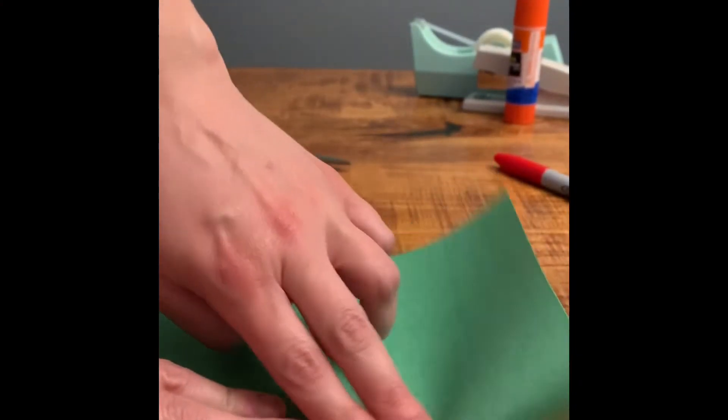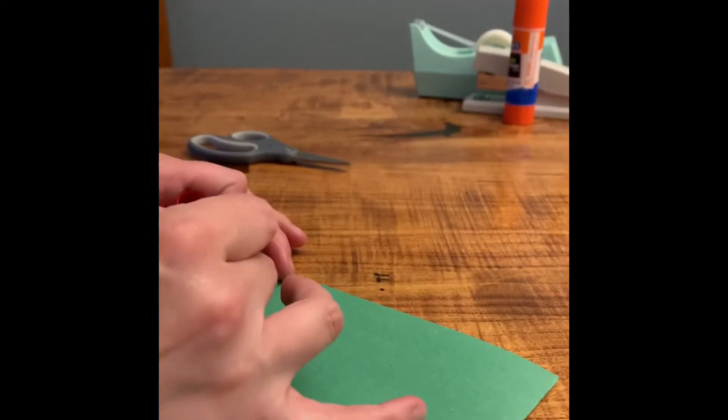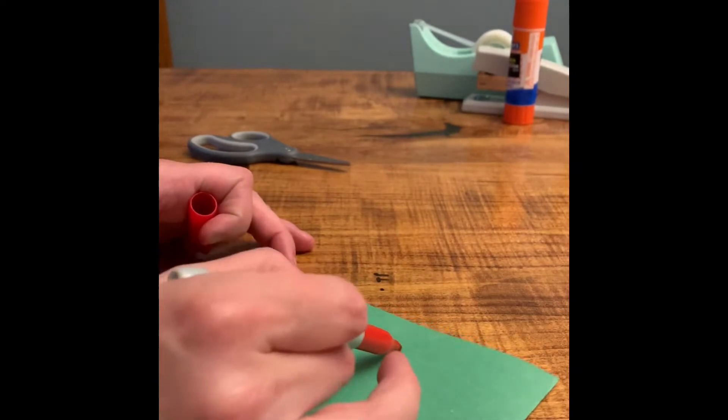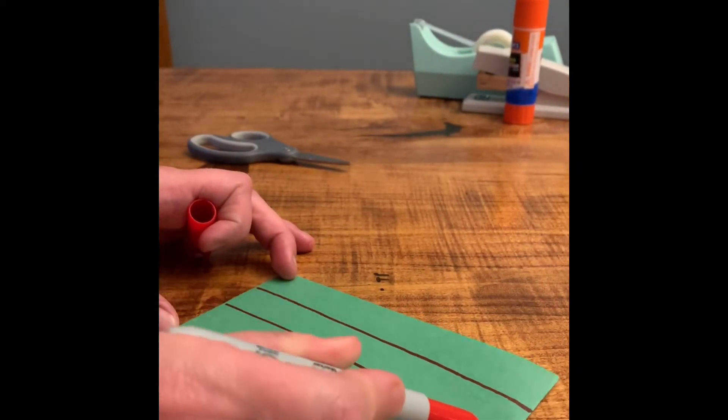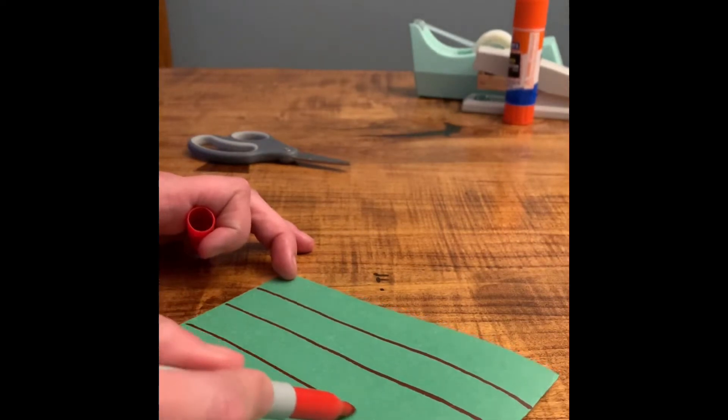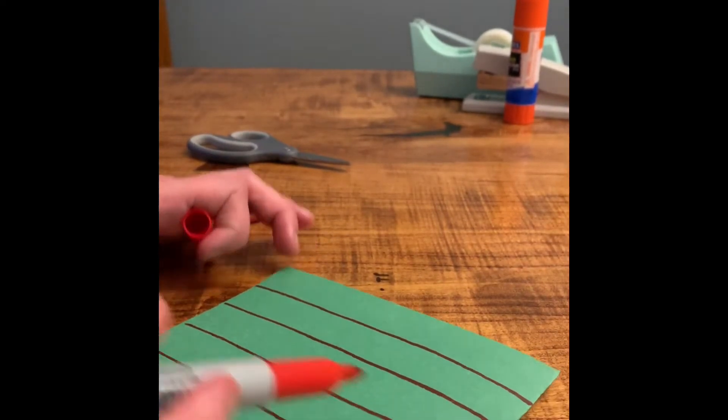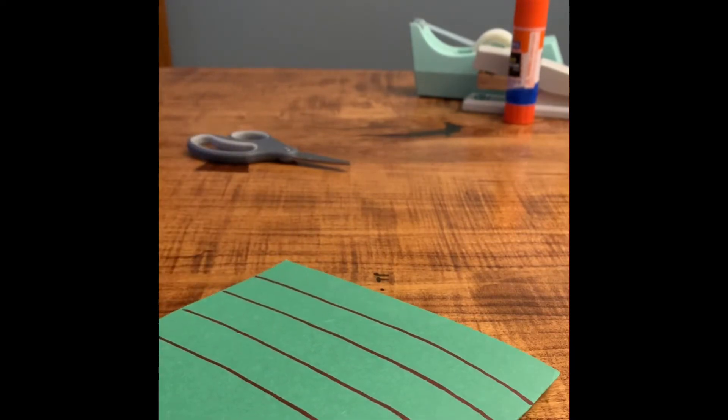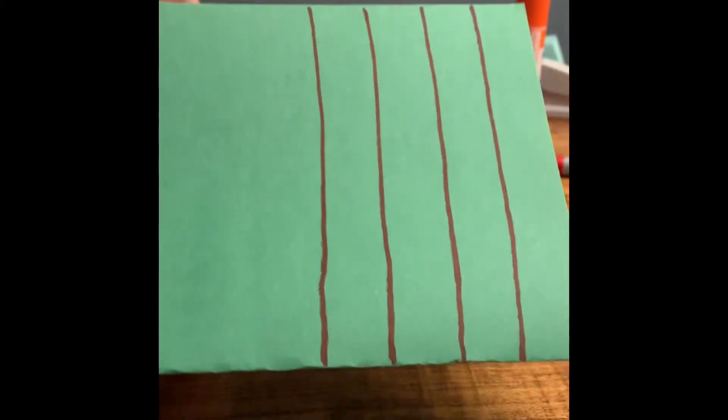Start with whatever color paper you'd like to use. I like to fold it in half so that I don't have to cut the full length of the paper. You just need to draw some lines about one inch apart, then you can cut your paper along those lines.